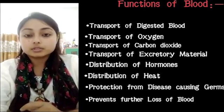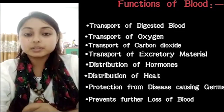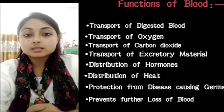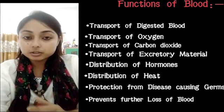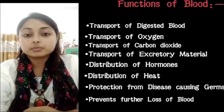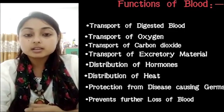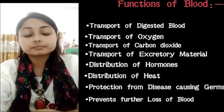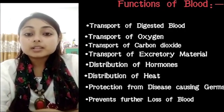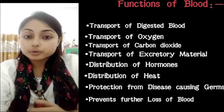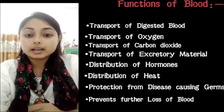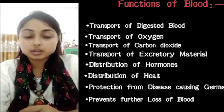Leuko means white and cytes means cell, so leukocytes are the white cells. Similarly, erythro means red and cytes means cell, so erythrocytes are the red cells. Blood also provides protection from disease-causing germs, and it helps in blood clotting — which is the function of platelets.